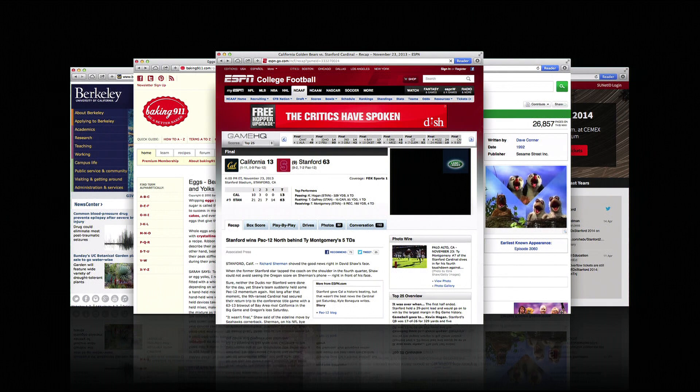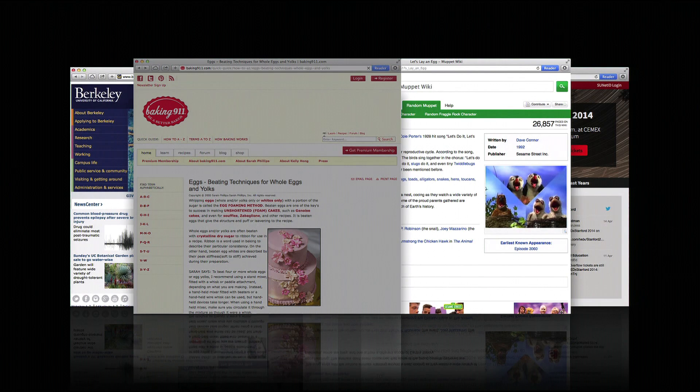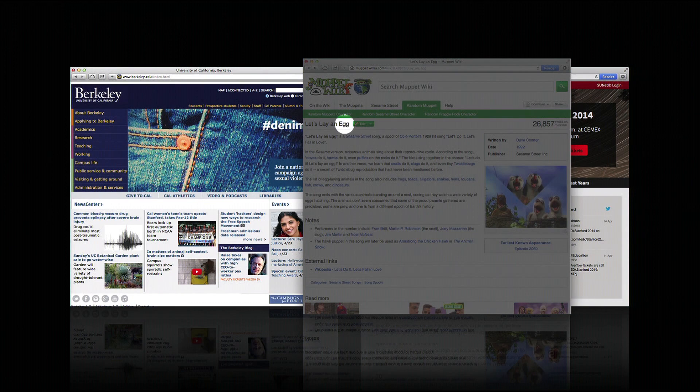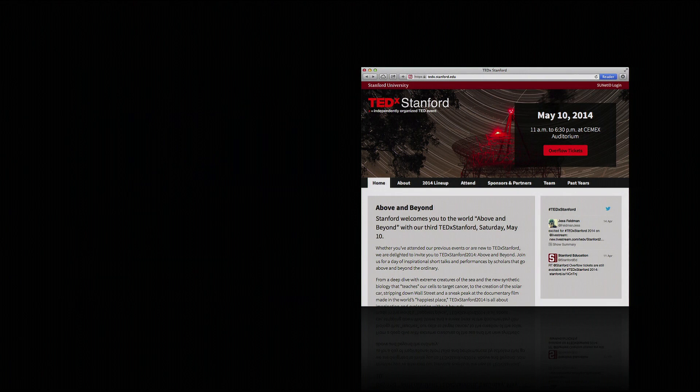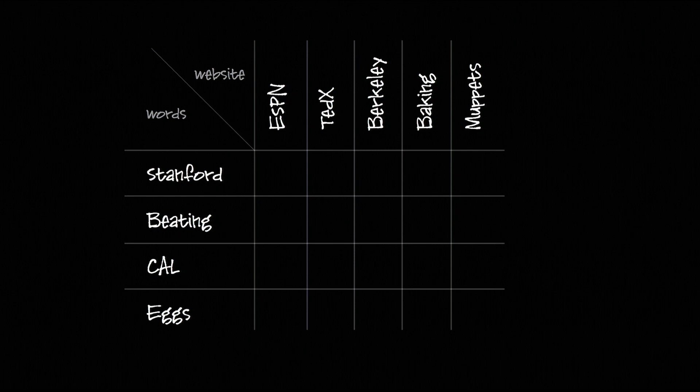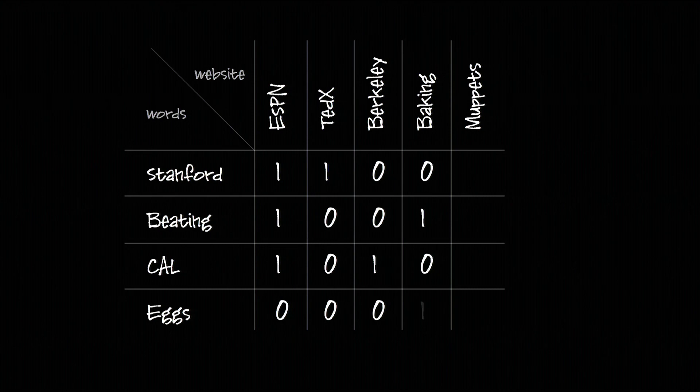Search engines use matrices that tell them which words occur in which websites. And we're going to take four randomly chosen words. Stanford, beating, cal, and the word eggs. And five websites that have one or more of these words in them. And so it's a website over cooking, over TEDx, Stanford, the Berkeley website. Now what a search engine does, it creates a beautiful table where each row of the table corresponds to a word and each column of the table corresponds to a web page. And if a word occurs in the web page, then you put a little one. And if it doesn't, you put a zero. And what do you get out of this? A matrix.